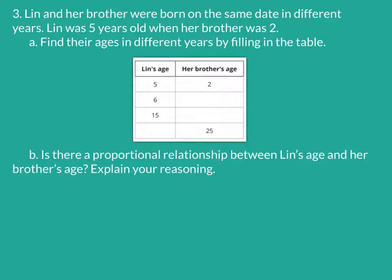Our first problem talks about two children, Lynn and her brother. They're born on the same date, but in different years. Lynn was 5 when her brother was 2. The first thing we have to do is find their ages by filling in the table. From 5 to 6, that's simply one year, so 2 plus 1 more is 3. From 6 to 15, everybody goes up one year each year, so from 6 to 15 is 9, and 3 plus 9 is 12.